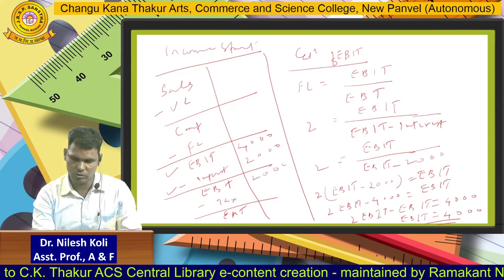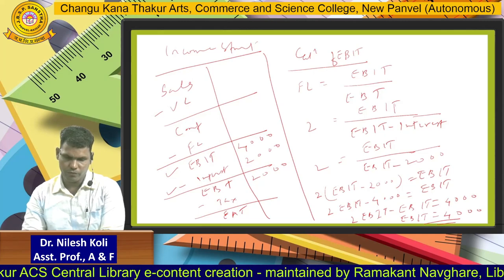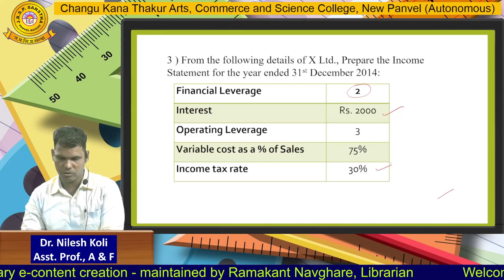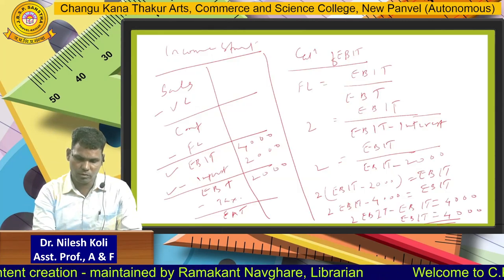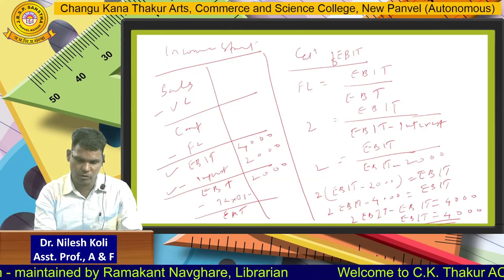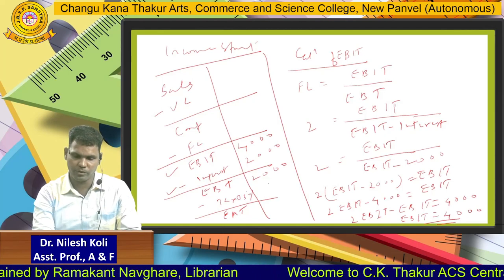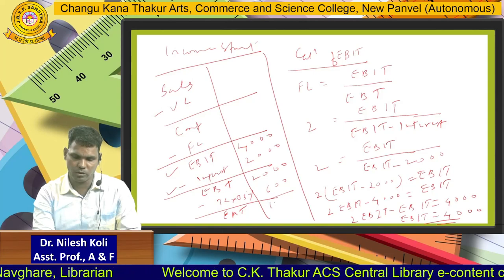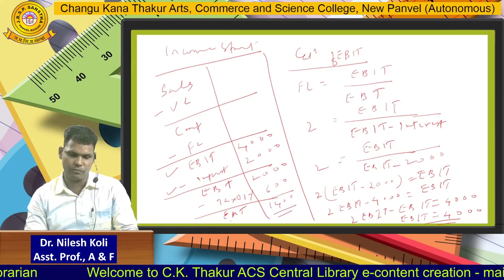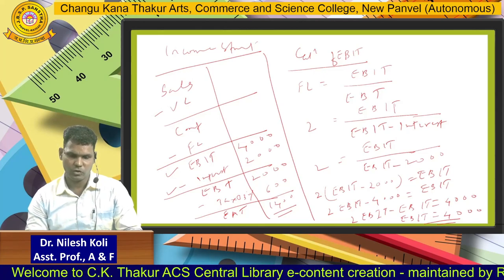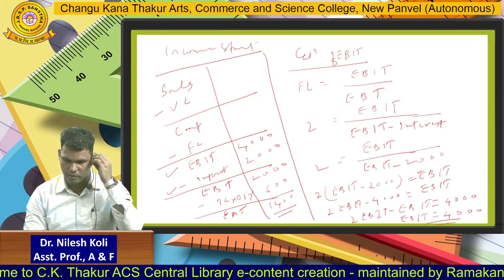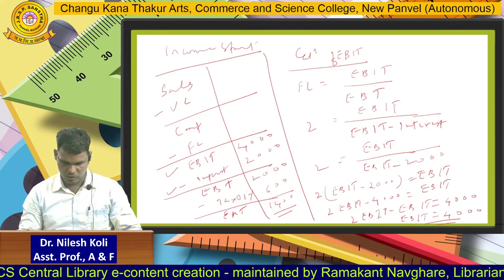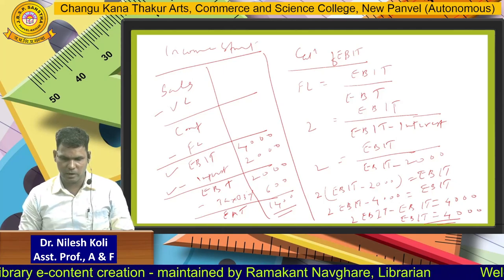EBT is 2000. Income tax rate is 30%, so tax = 2000 into 30% = 600. Therefore EAT (earning after tax) = 2000 minus 600 = 1400. So from EBIT to EAT calculation is done. Now further we will go for the calculation of contribution.